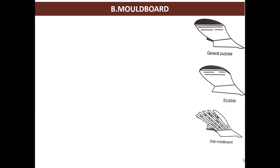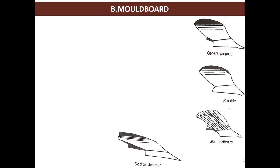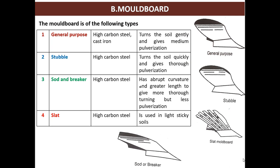Types of moldboard: general purpose, stubble, slat moldboard, and sod or breaker moldboard. General purpose moldboard is made up of high carbon steel or cast iron - it turns the soil gently and gives medium pulverization. Stubble moldboard is made up of high carbon steel; it turns the soil quickly and gives thorough pulverization. Sod and breaker type is also made up of high carbon steel - it has abrupt curvature and greater length to give more thorough turning but less pulverization.